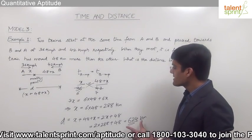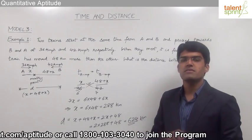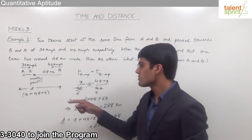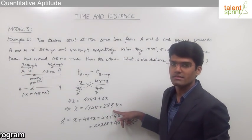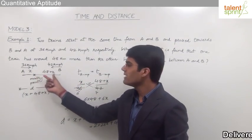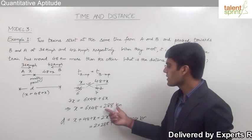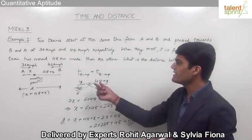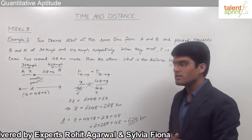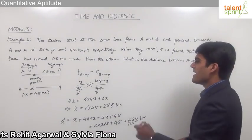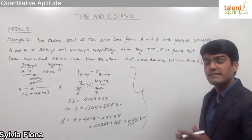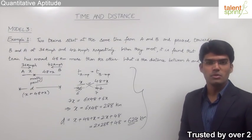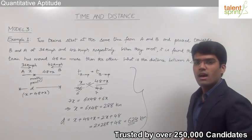In some questions, instead of asking the total distance, the distance of the meeting point from station A or station B is asked. The distance from station A is simply x, giving 288 km. If the distance from station B is asked, the answer is 48 plus x, that is 336 km. After understanding the traditional method, let us now look at the smart way of getting the answer in just two steps without writing all of those steps.